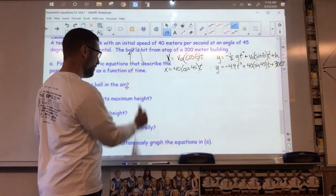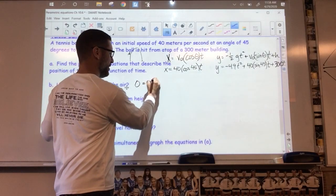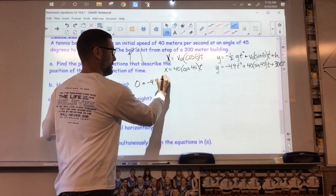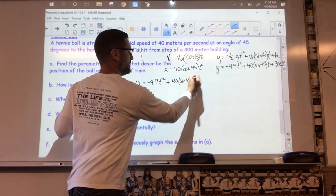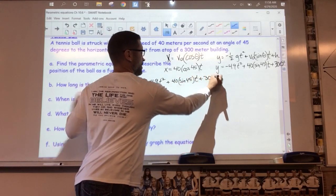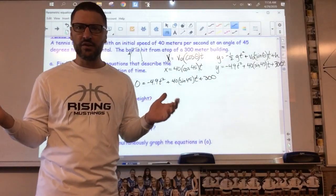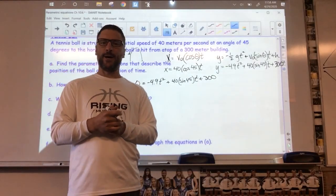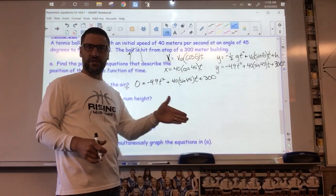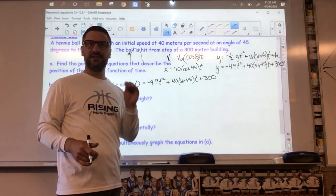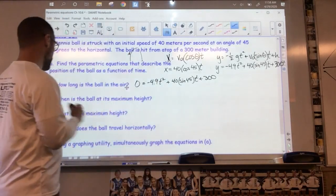So here we go. How long is the ball in the air? Well, the ball is in the air when the y value hits zero, the ball ceases to be in the air. Negative 4.9t² plus 40 sine of 45 times t plus 300. Use the quadratic formula or your app on your calculator. You're going to find a t value. There'll be two answers, one's negative, one's positive. The positive value is how long that ball was in the air until it hit the ground. Go in and find it.